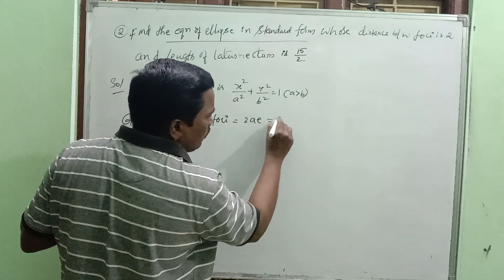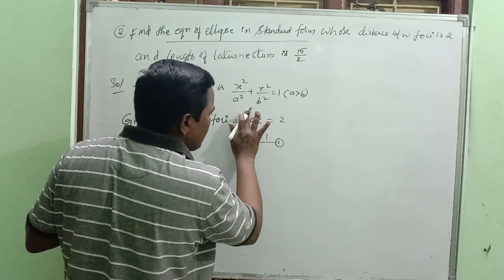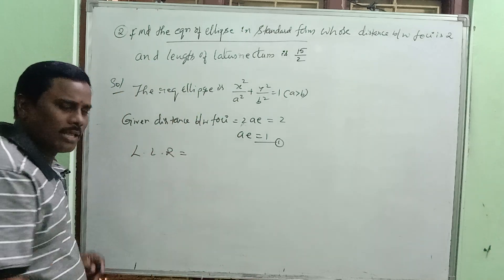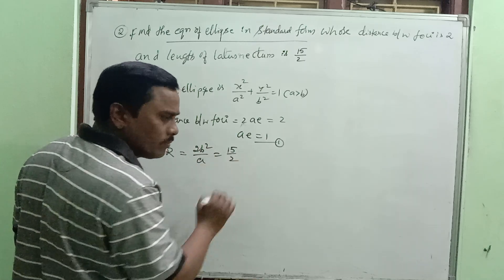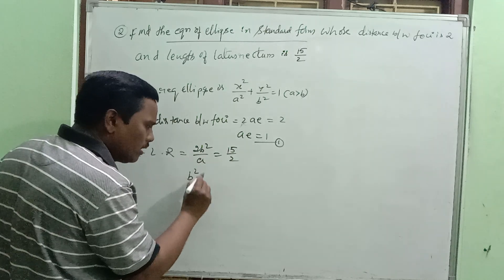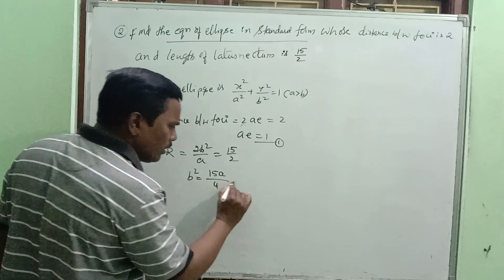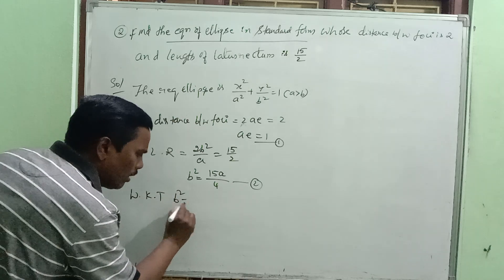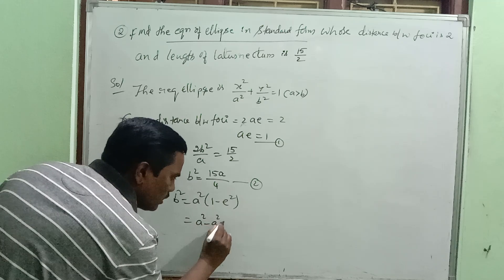Distance between foci = 2ae = 2, so ae = 1. Length of latus rectum = 2b²/a = 15/2, so b² = 15a/4. Using b² = a²(1 - e²) = a² - a²e².